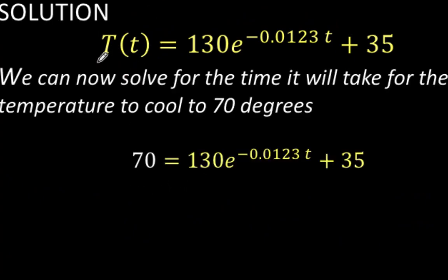Our target temperature is 70 degrees Fahrenheit, so we can replace this by 70. We now arrive at this equation: instead of T(t) we have 70. And from here we can now solve for t.